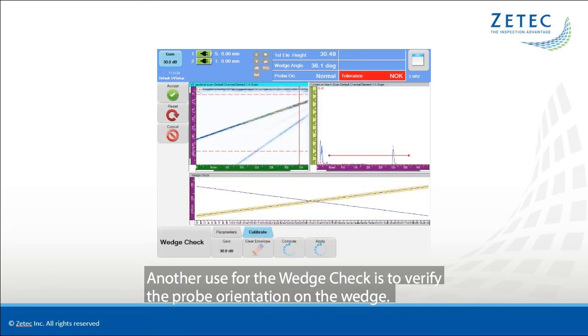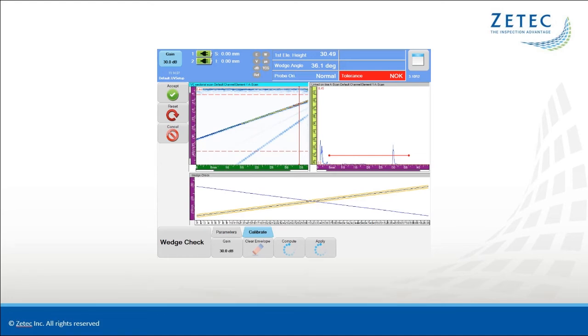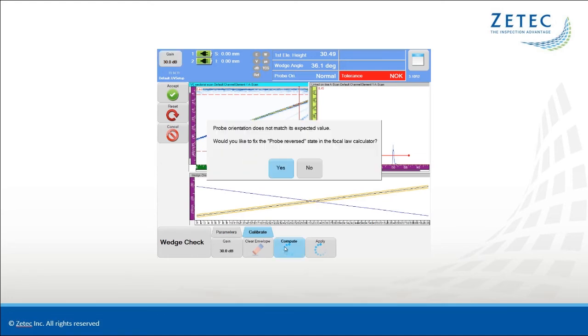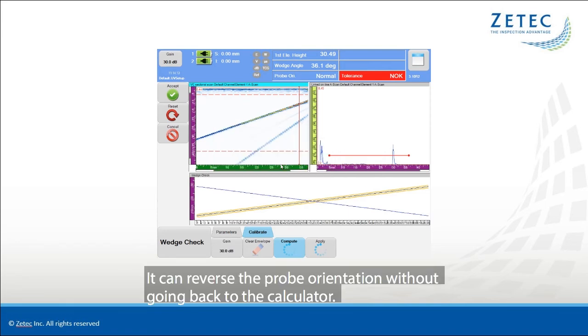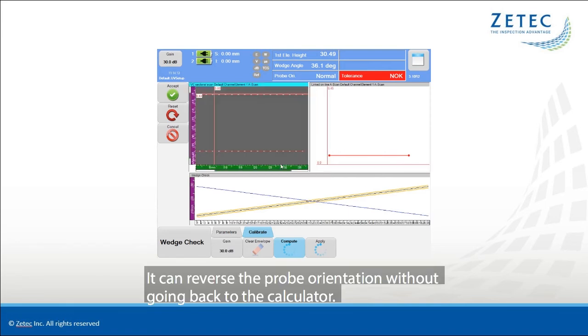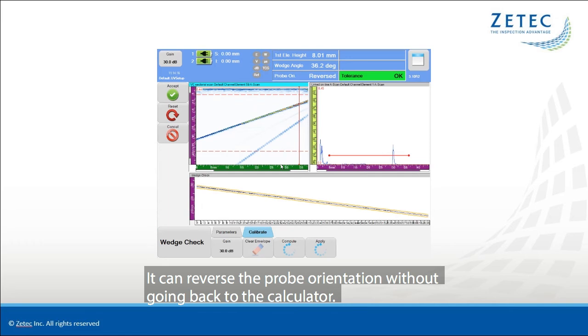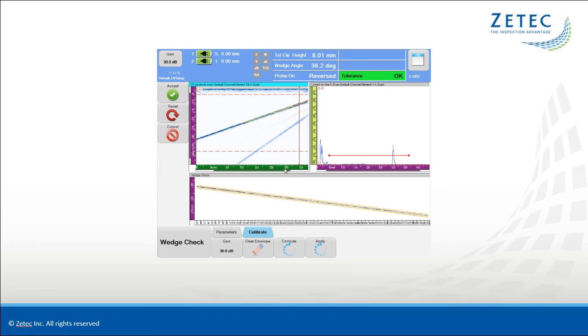Another use for the Wedge Check is to verify the probe orientation on the wedge. It can reverse the probe orientation without going back to the calculator.